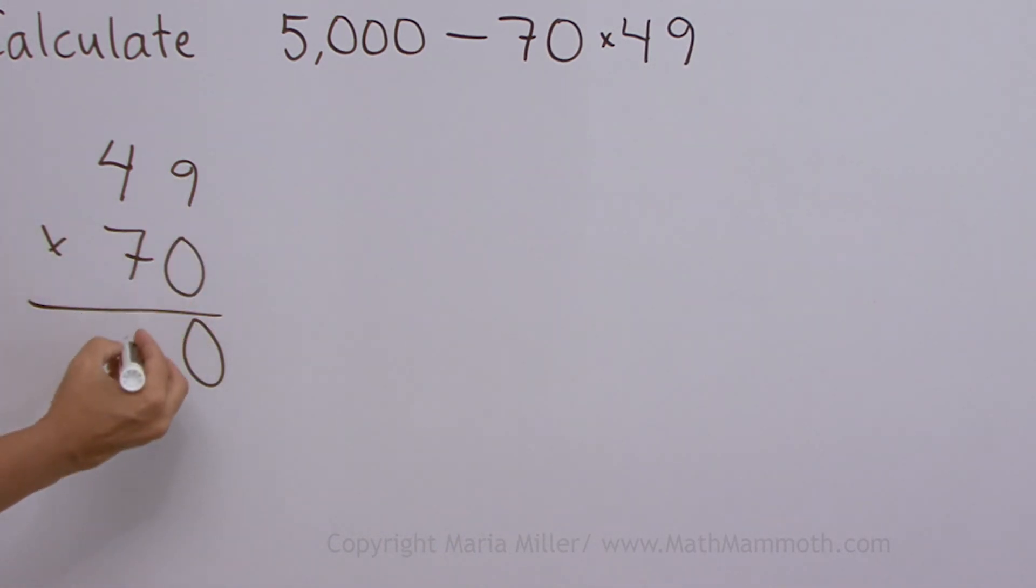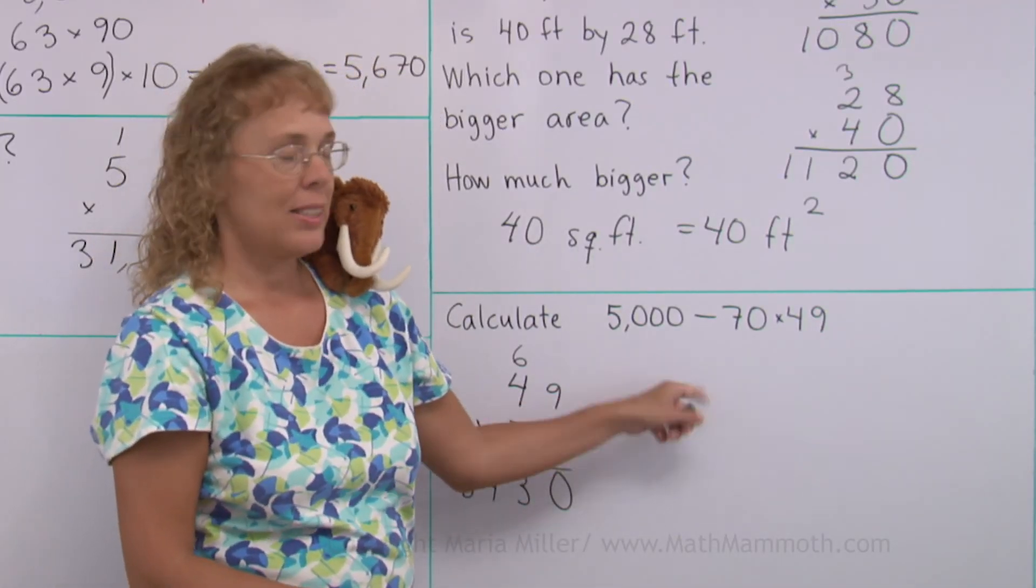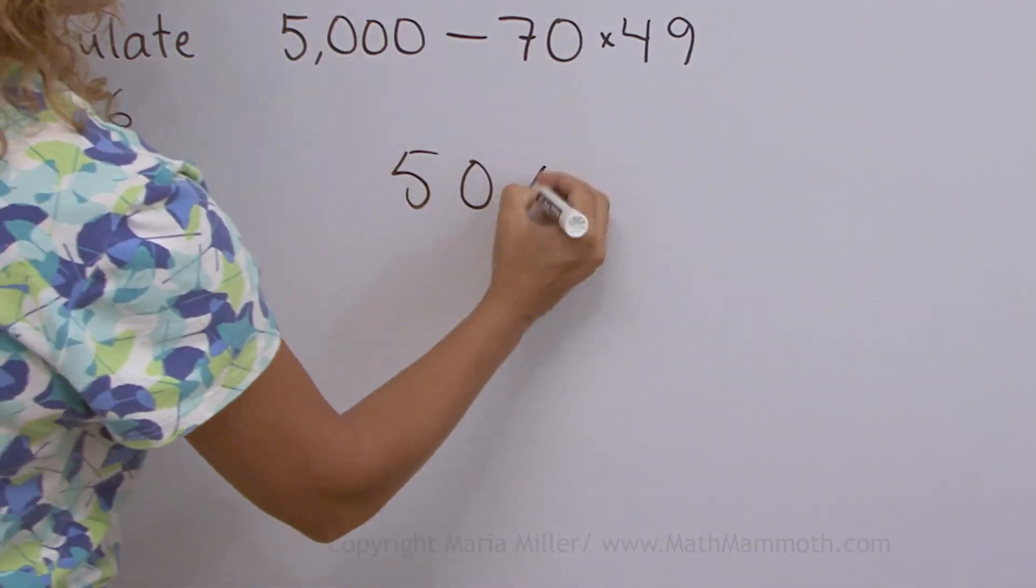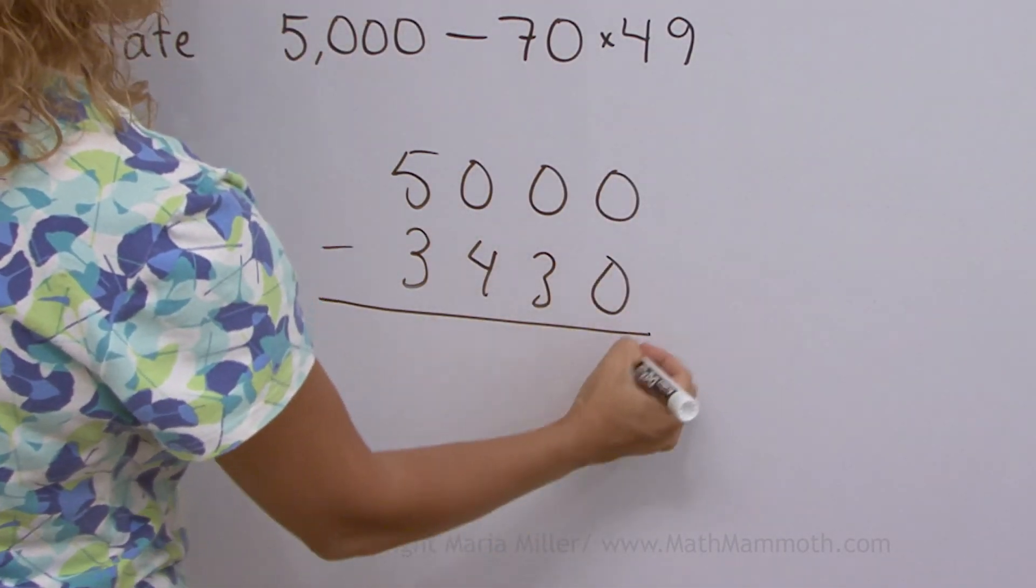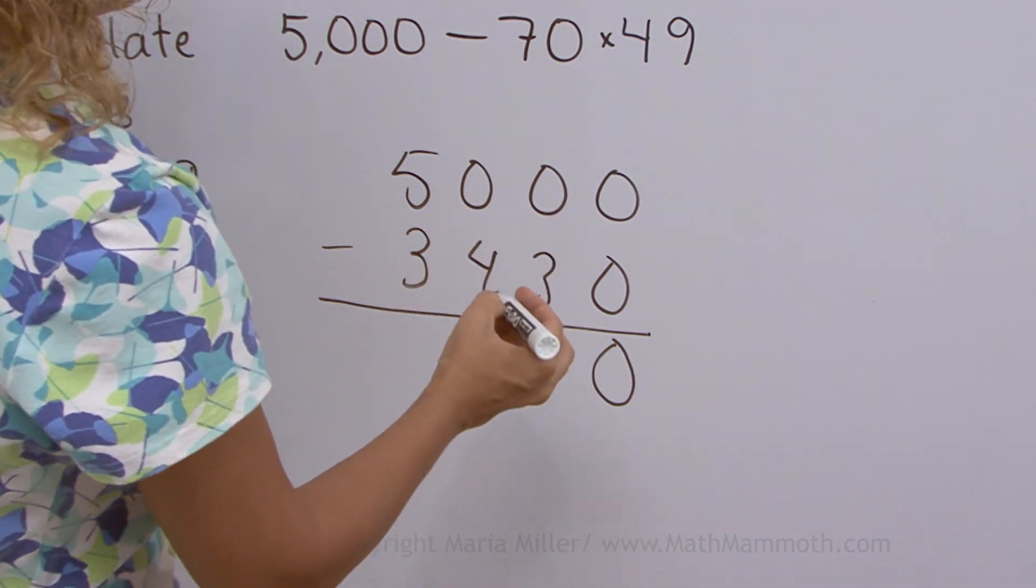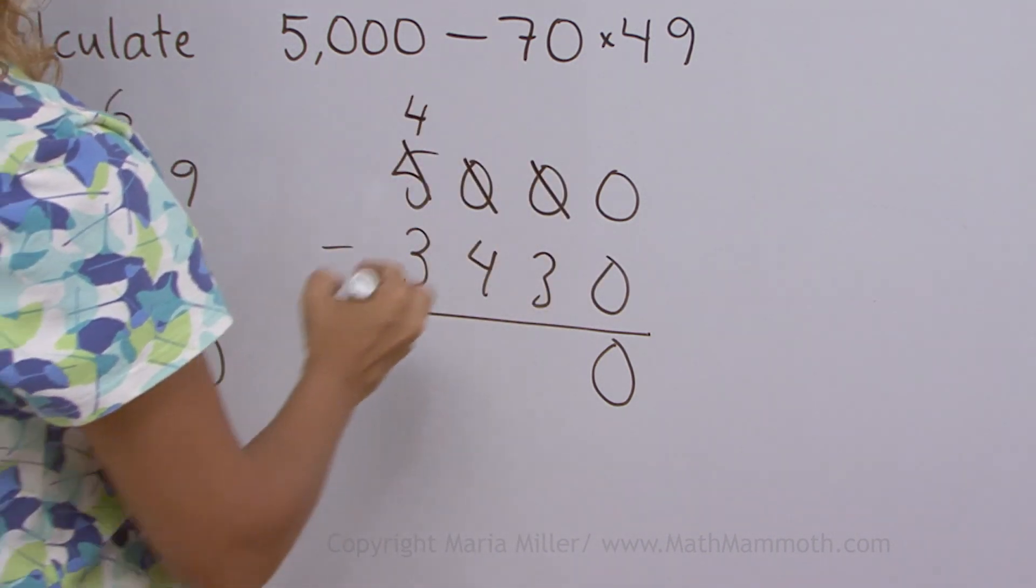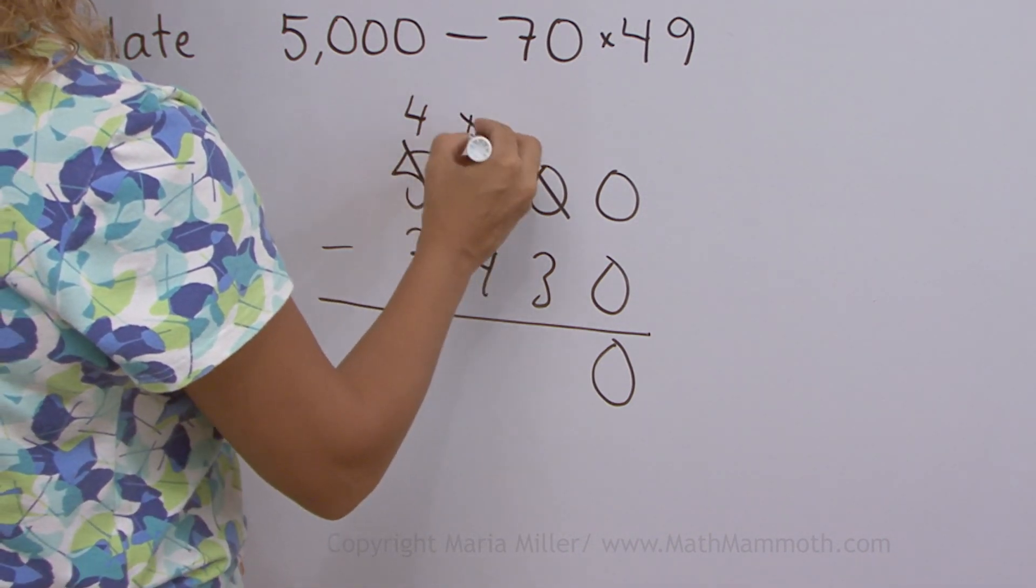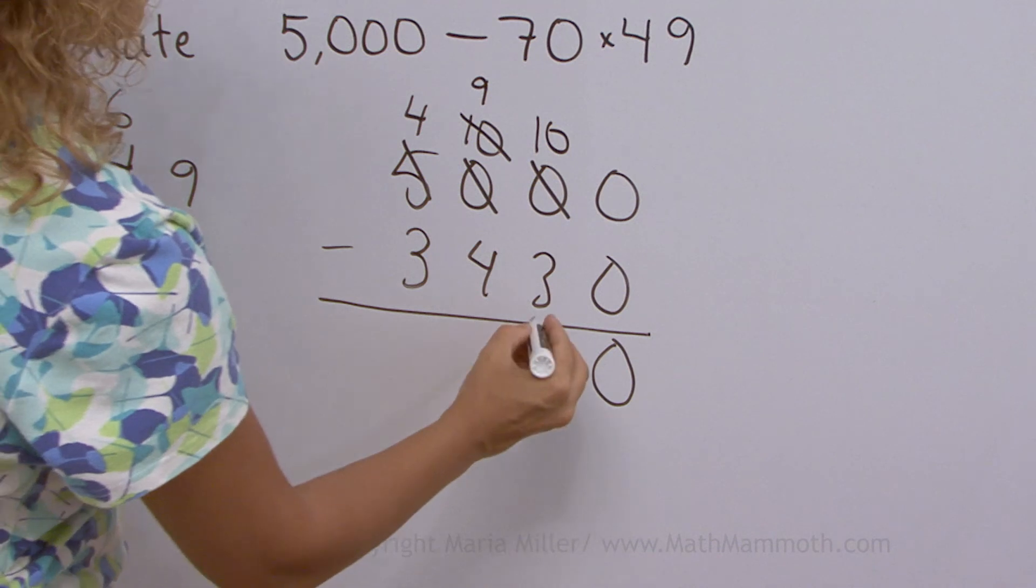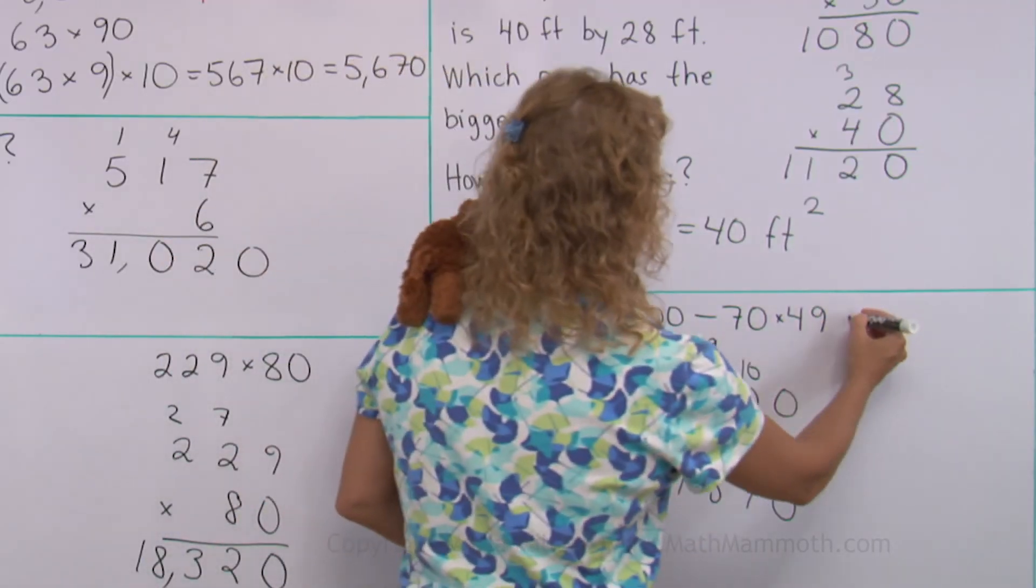0 goes there. Then 7 times 9, 63. How about 7 times 4? 28. Plus 6 is 34. Okay. That's done. Then subtract. 0 minus 0. 0 minus 3. Well, okay. That means I need to regroup. Take one of those thousands. 10 here. Then take one of them. 10 here. And then we have 7 and 5 and 1. 10 here. So our final answer is right there.